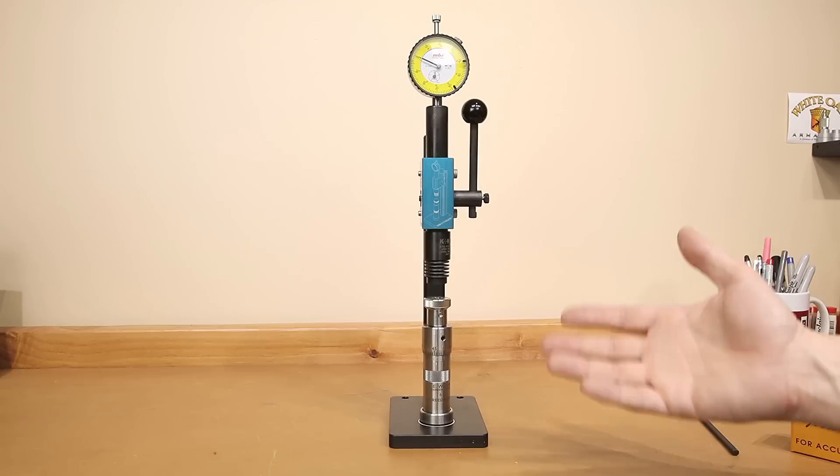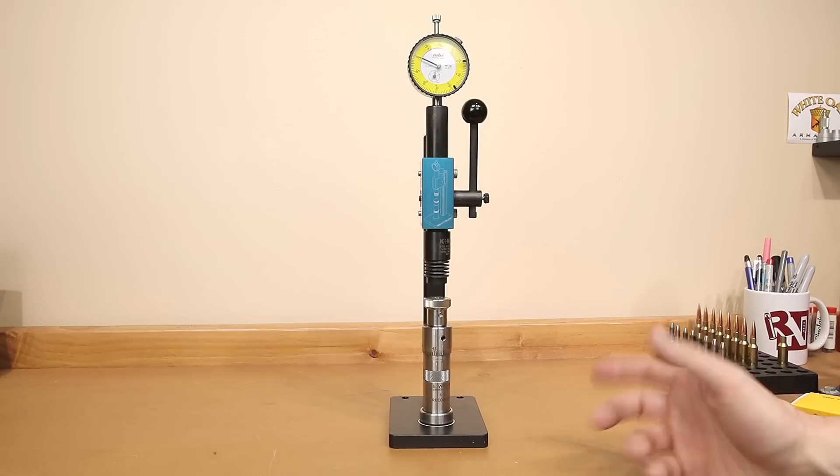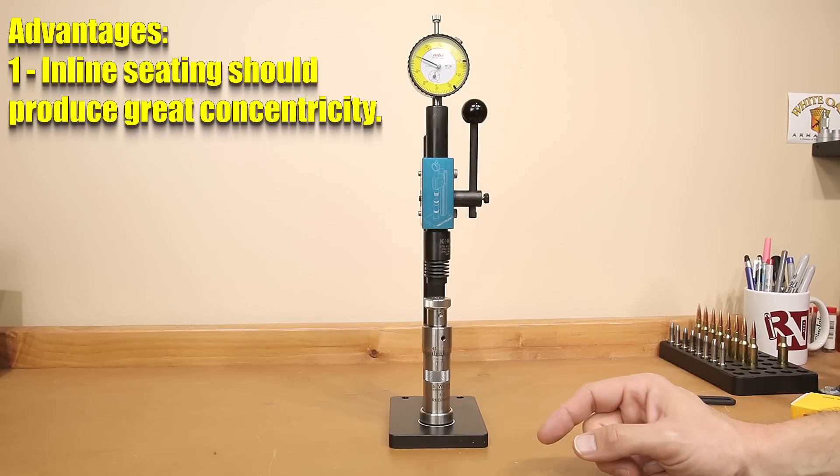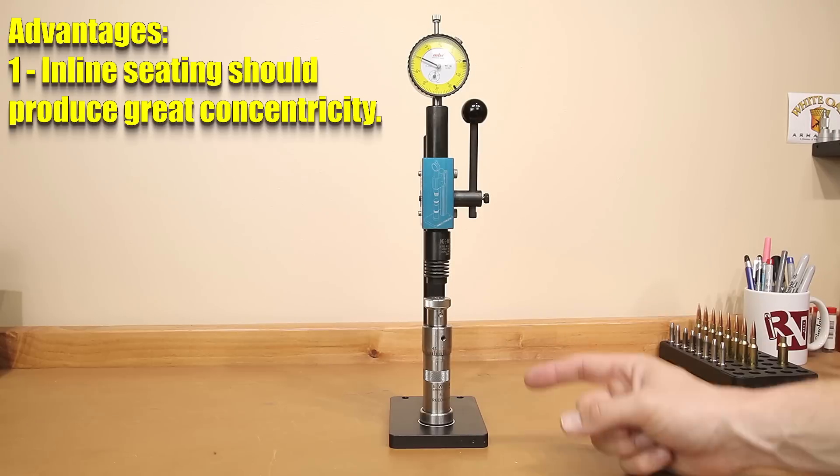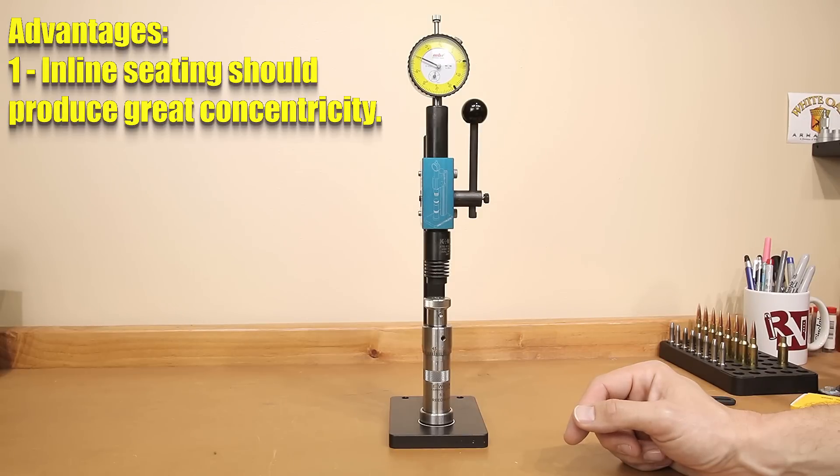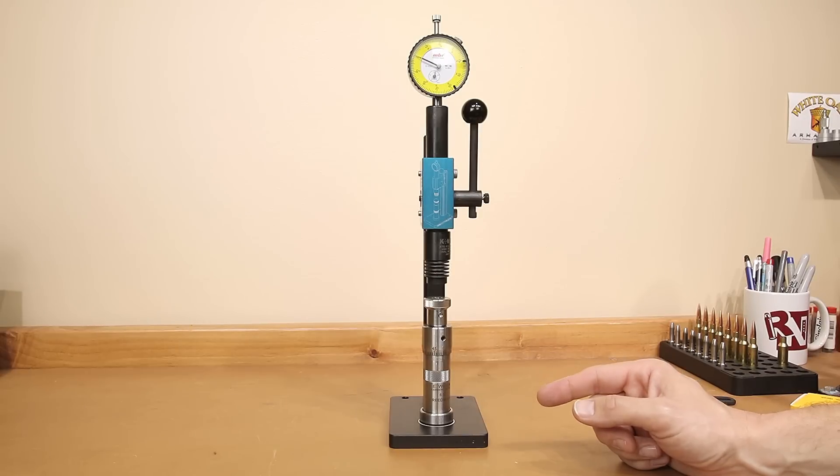You may wonder what specific advantages this setup is going to give you. The first is inline concentricity. I can't imagine a setup that's going to do a better job of keeping everything in perfect alignment during the seating process. I have seen several disciplines of shooting sports start to use these styles of seating dies. So depending on your application, it may be a need. For others, it may just be a nice to have for that extra peace of mind.